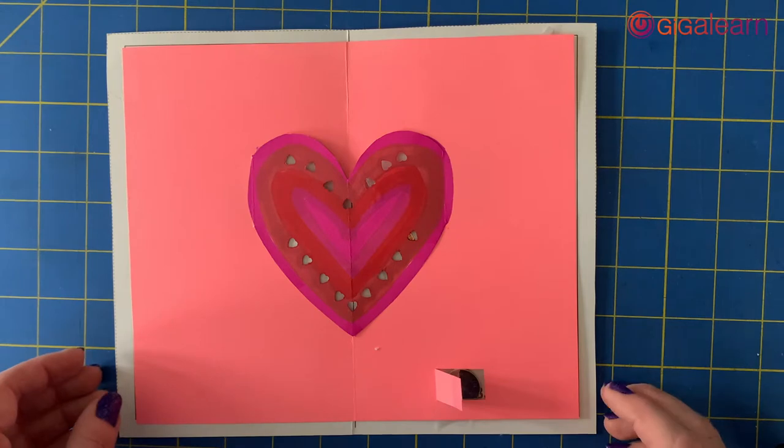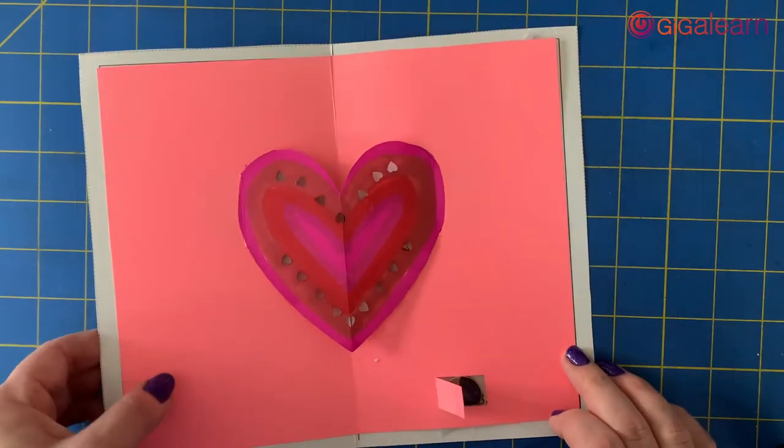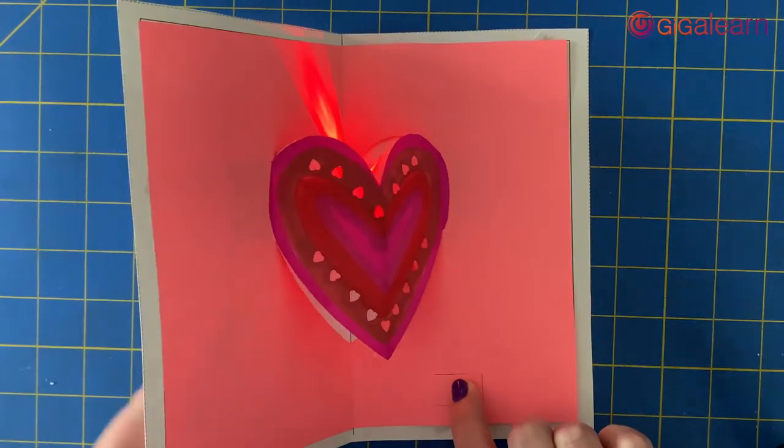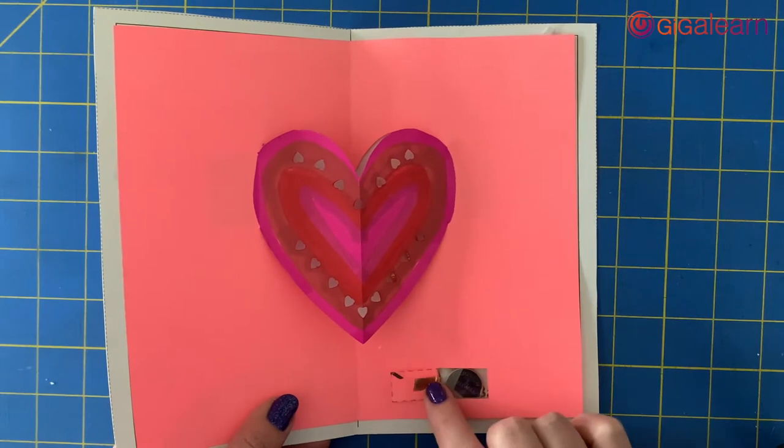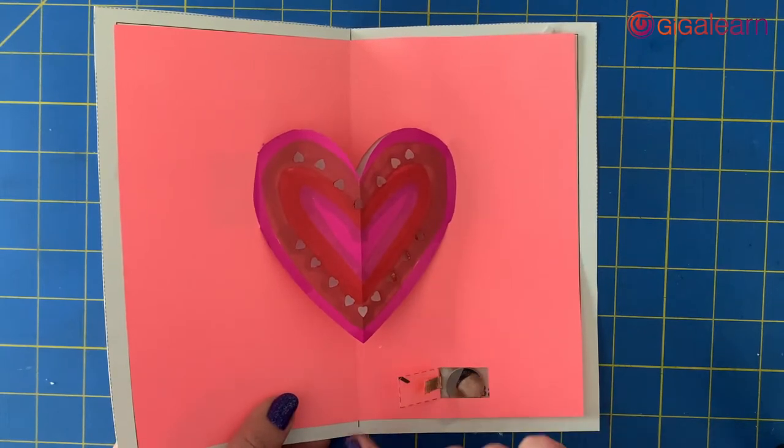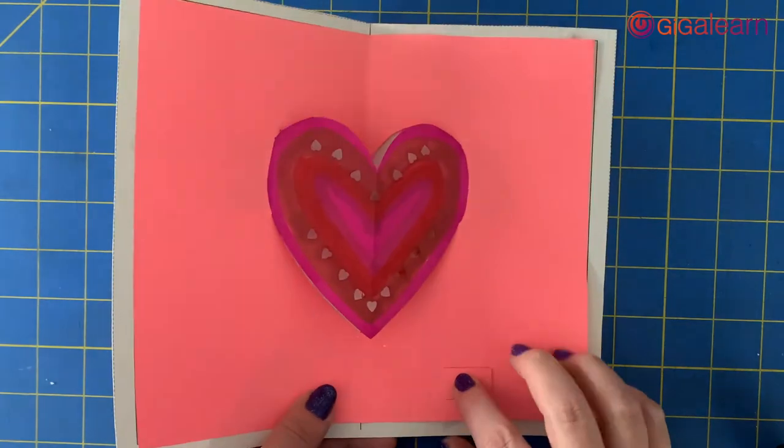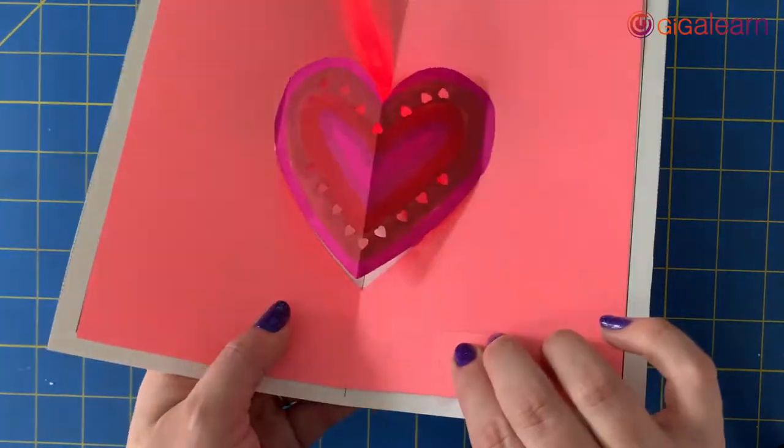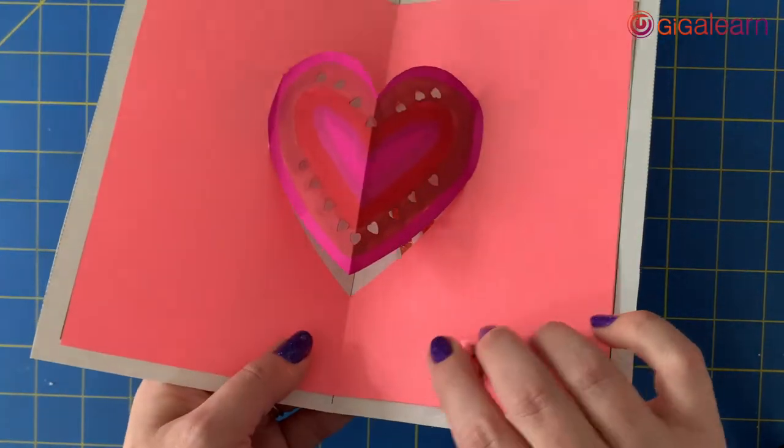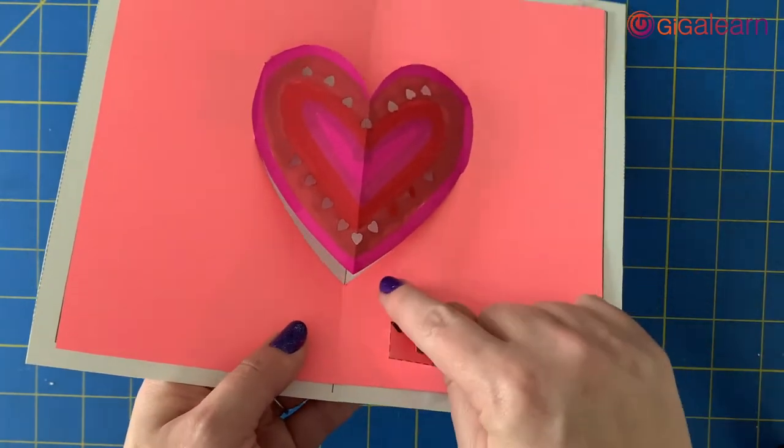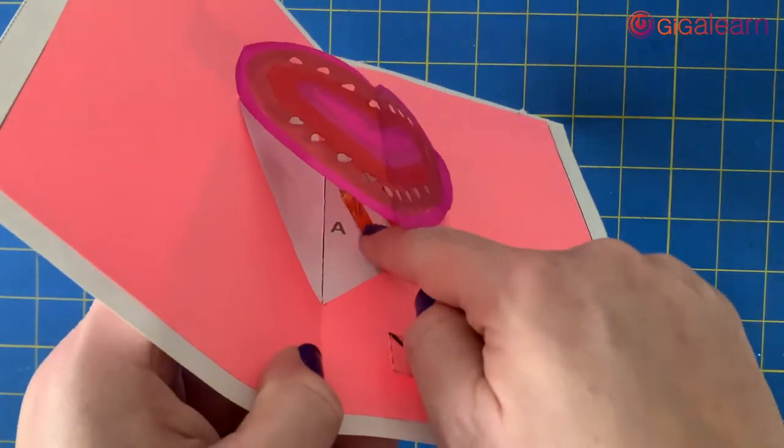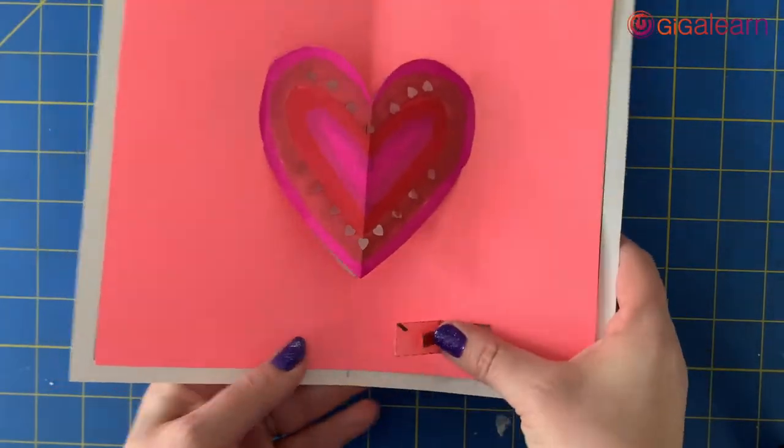Alright, so we're going to get started with our cards. I have an example one here for you. You can see we have this little flap with our copper tape that when it touches onto the battery, it lights up our card. We also have the pop-up going on. We're going to start by working on the circuit, which you can kind of see underneath here.